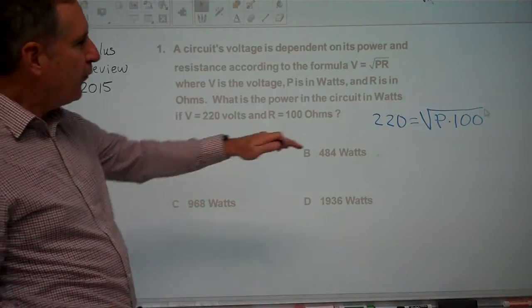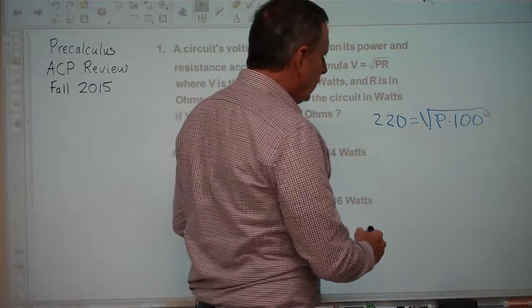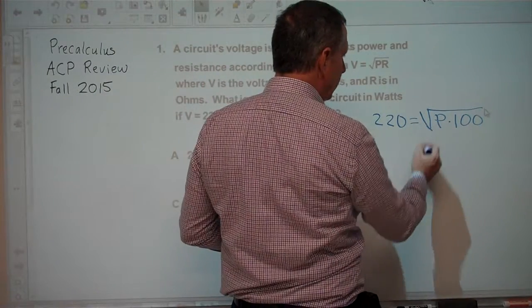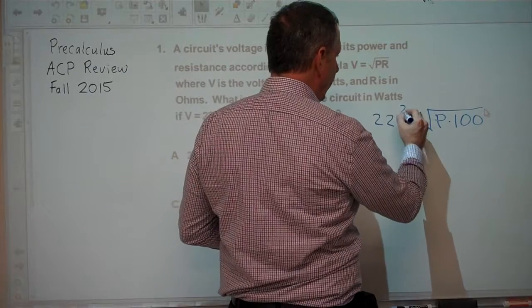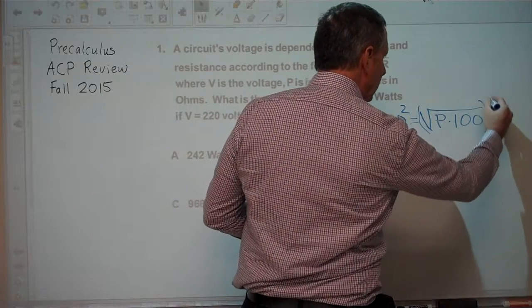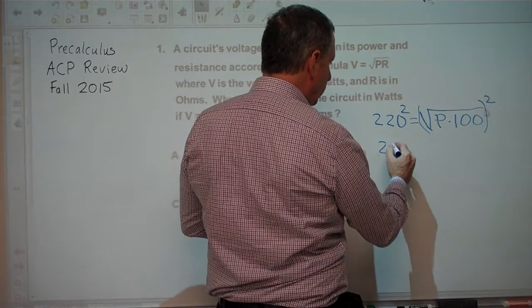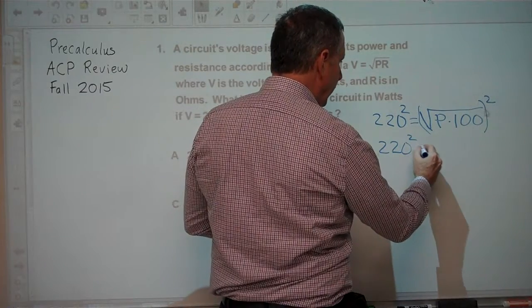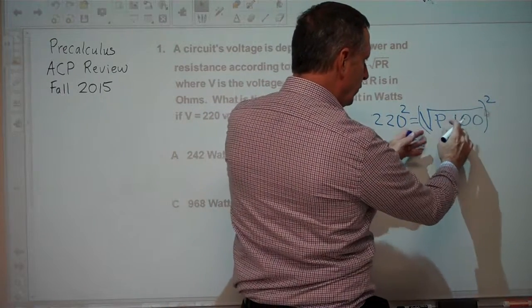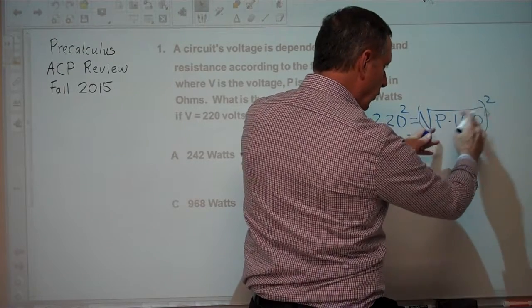To isolate P, we can square both sides of the equation. On the left side, we have 220 squared, and on the right side, the square root and the square cancel each other, leaving us with P times 100.